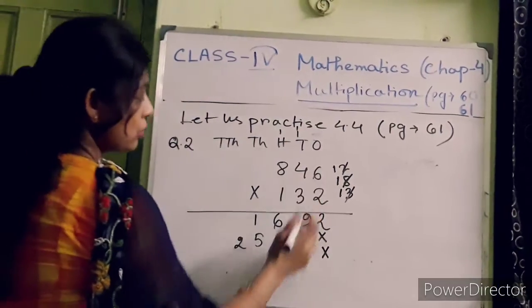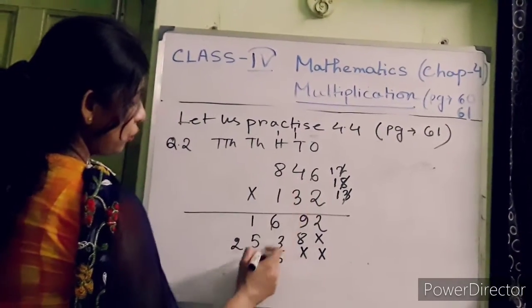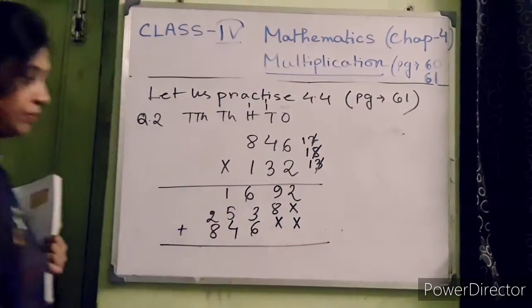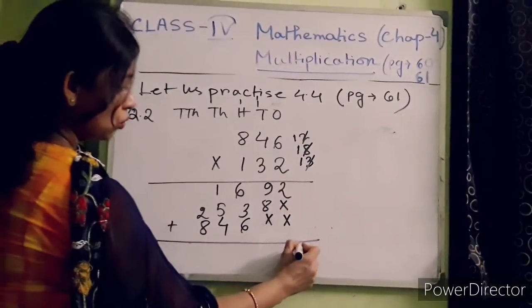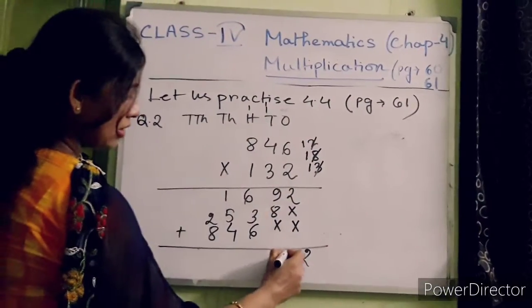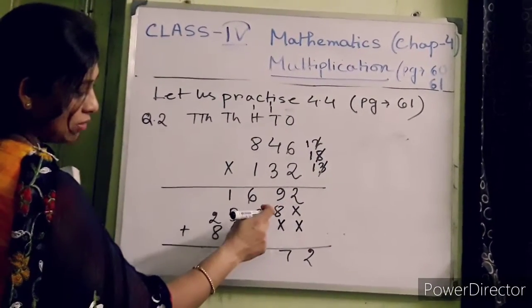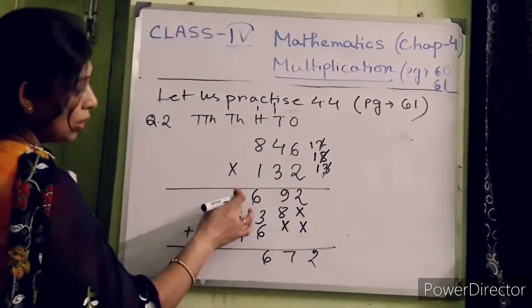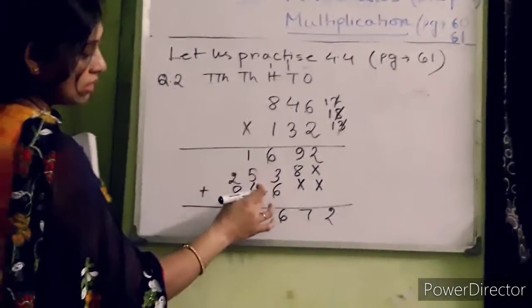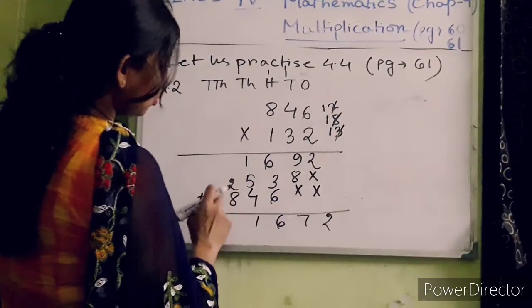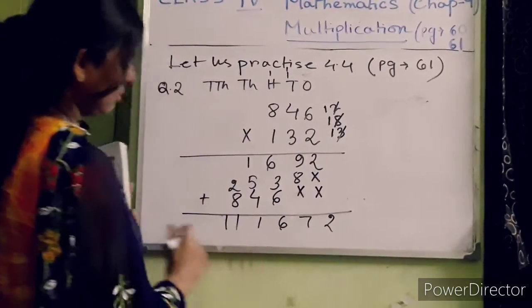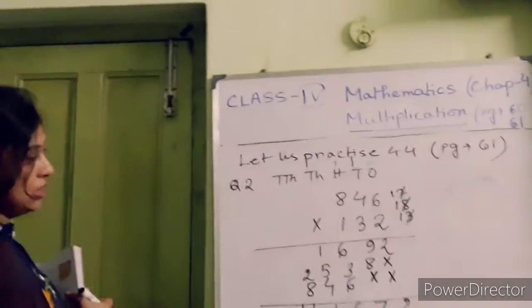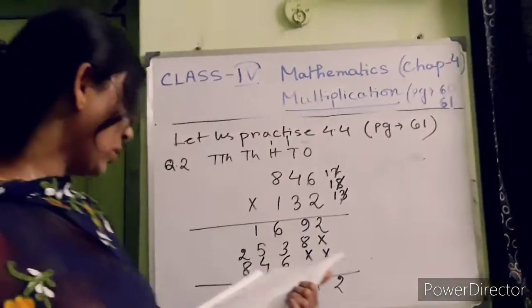Now you multiply this number with one. One into six is six. One into four is four. One into eight is eight. Now you add these three numbers. Nine plus eight is seventeen, carry one. Six plus one is seven, seven plus three is ten. Ten plus six is sixteen, carry one. One plus one is two, five plus two is seven, seven plus four is eleven, carry one. Eight plus one is nine, so four plus — you can erase the plus sign. Ok, now the next one.